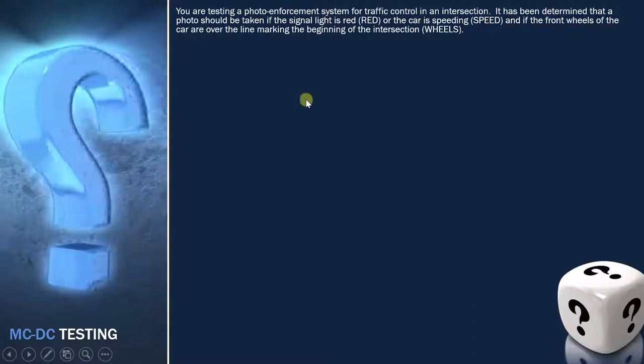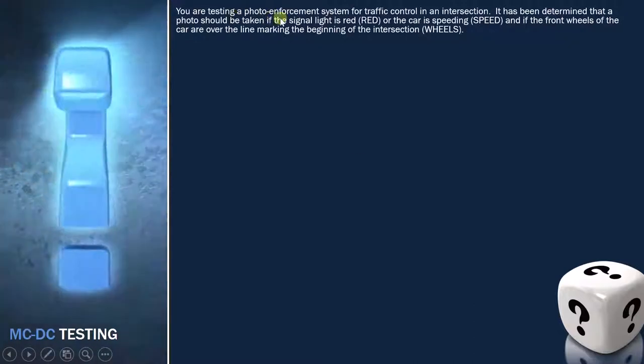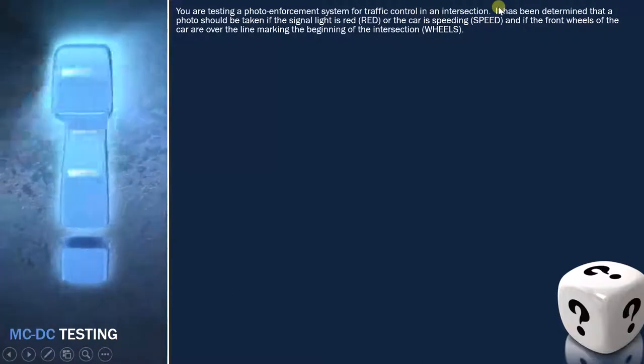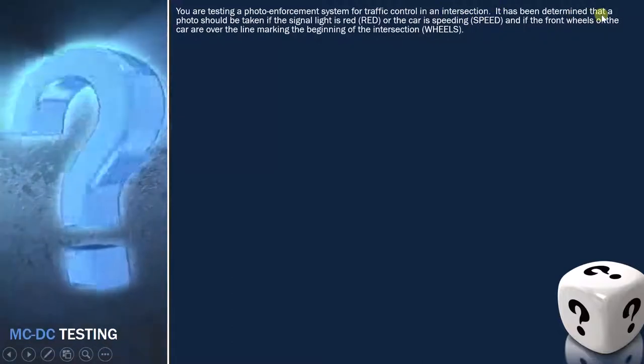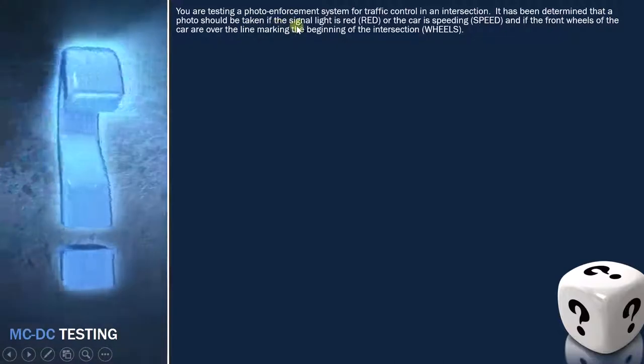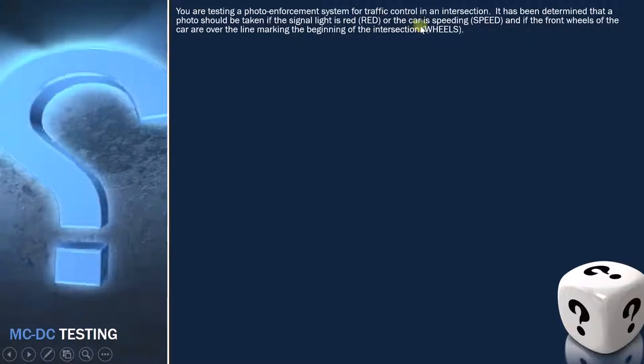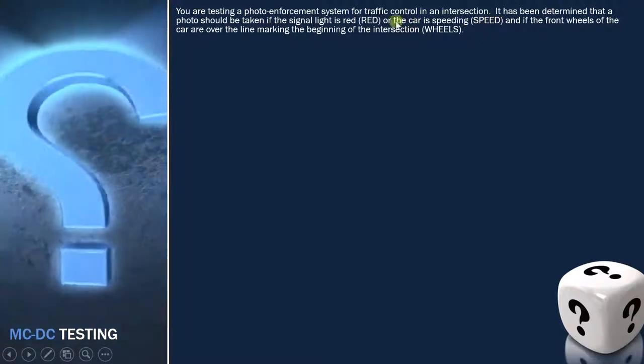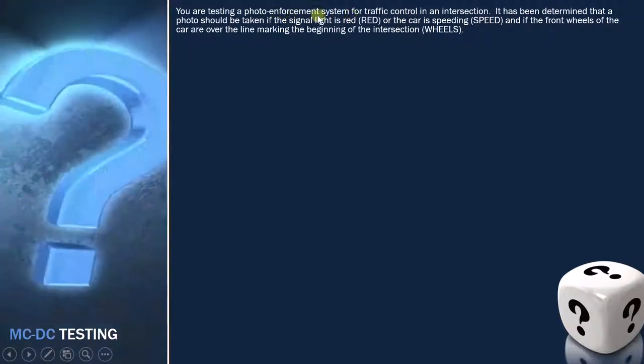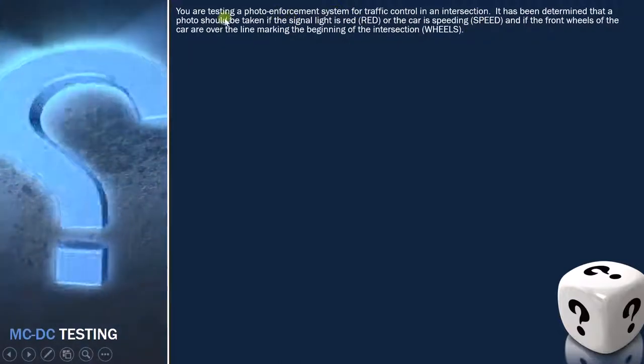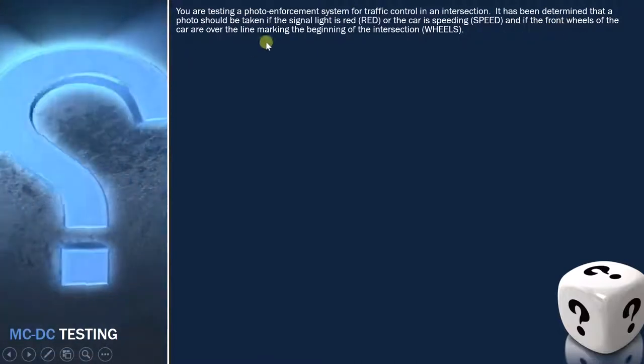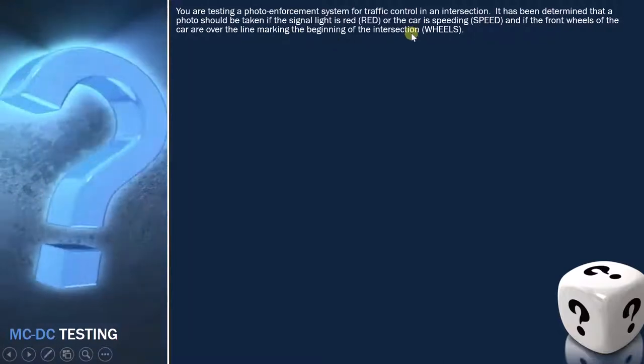So this is an example. You are testing a photo enforcement system for traffic control in an intersection. It has been determined that a photo should be taken if the signal light is red or the car is speeding. So this is an additional condition which is added here. So even if the light is red or the car is speeding, in both cases you have to take the photo provided that the front wheels of the car are over the line marking the beginning of the intersection.